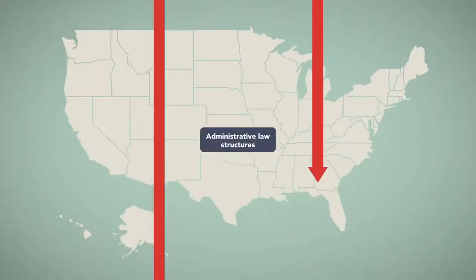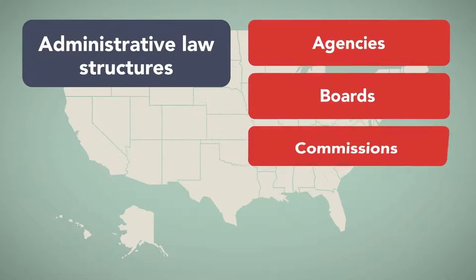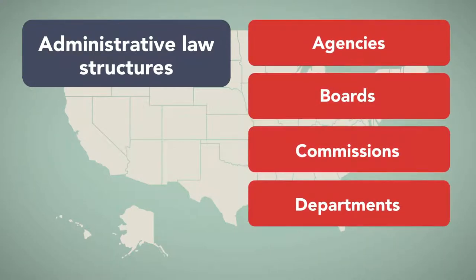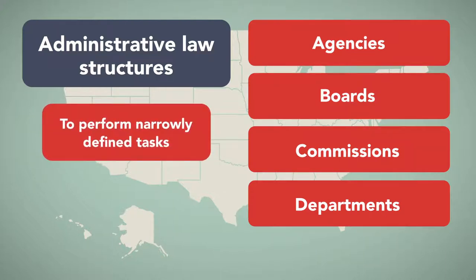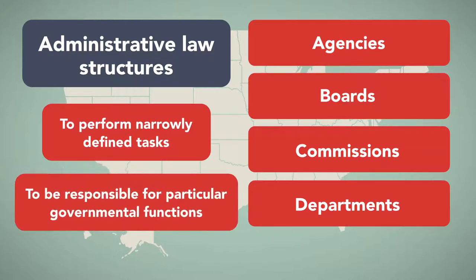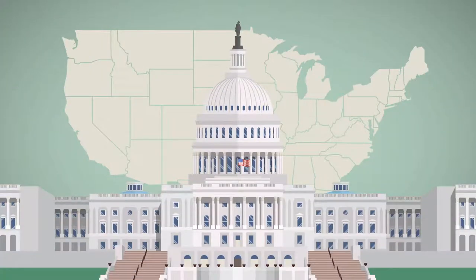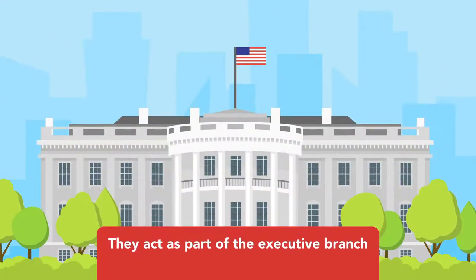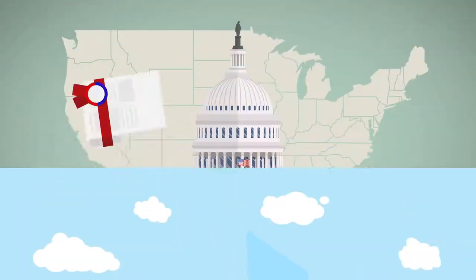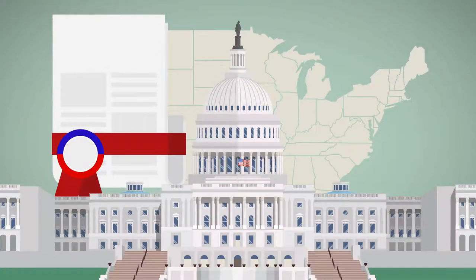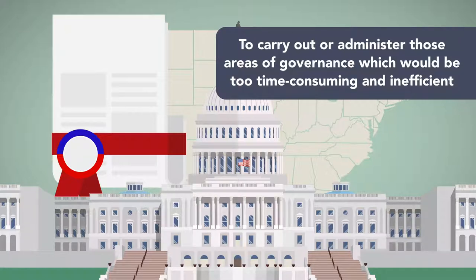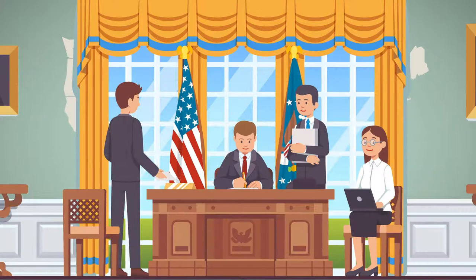Administrative Law Structures refer to designated agencies, boards, commissions, departments, and other governmental institutions which have been created to perform narrowly defined tasks or to be responsible for particular governmental functions. While they are typically delegated authority by Congress, they act as part of the executive branch. These institutions are created and granted powers by Congress to carry out or administer those areas of governance which would be too time-consuming and inefficient for the president, the presidential staff, or Congress to manage without such structures.